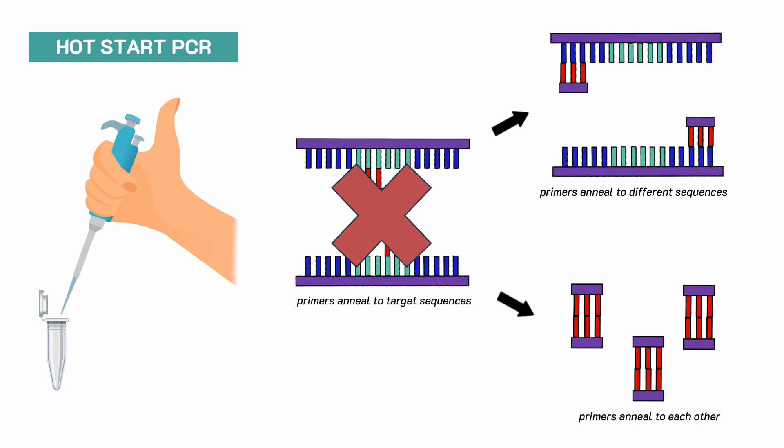During the PCR setup, when we add the necessary components for the reaction, primers can bind non-specifically to each other or to different DNA sequences. DNA polymerase can then extend these sequences and we can get an unwanted non-specific product.